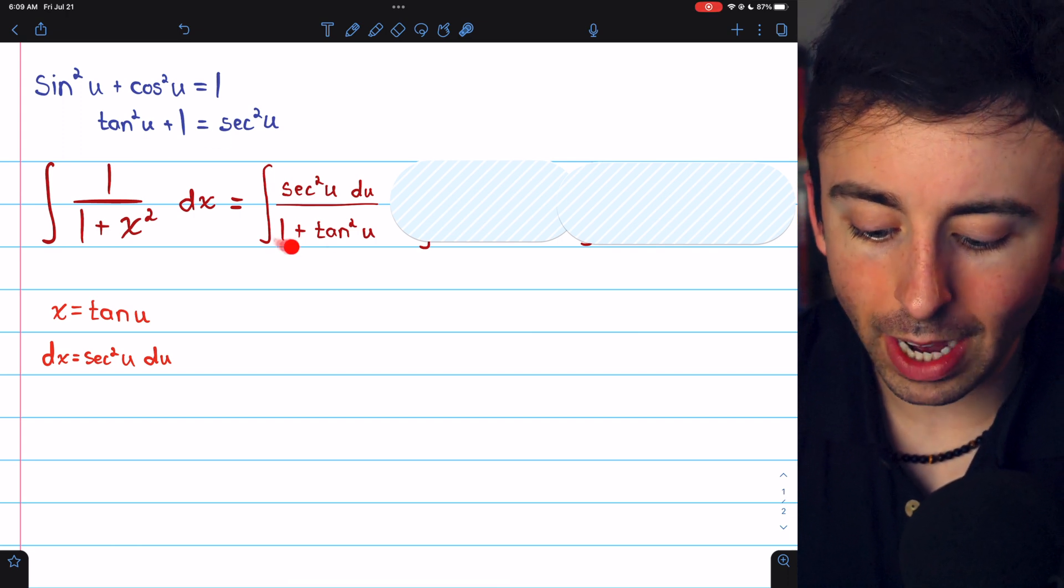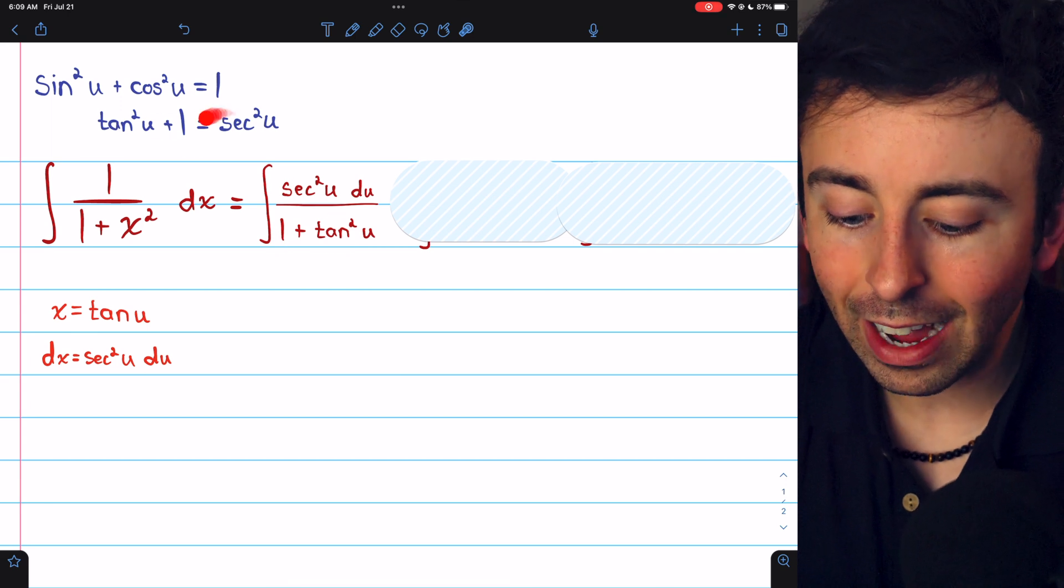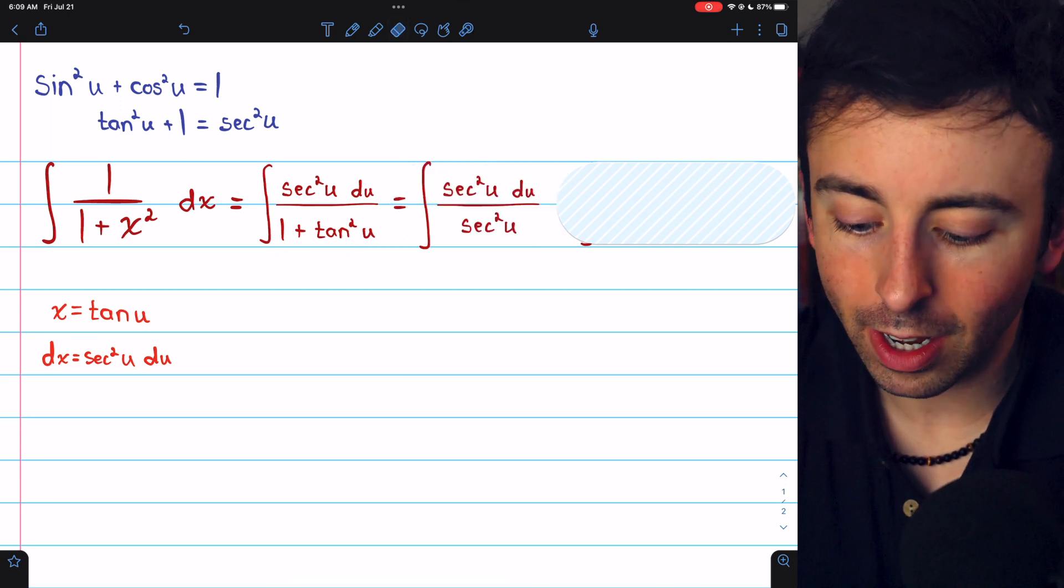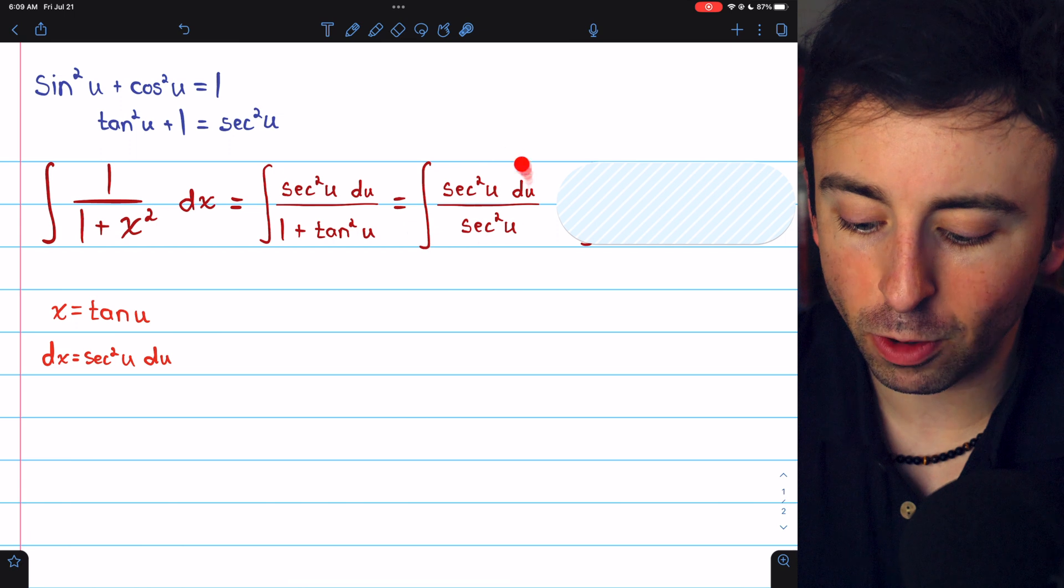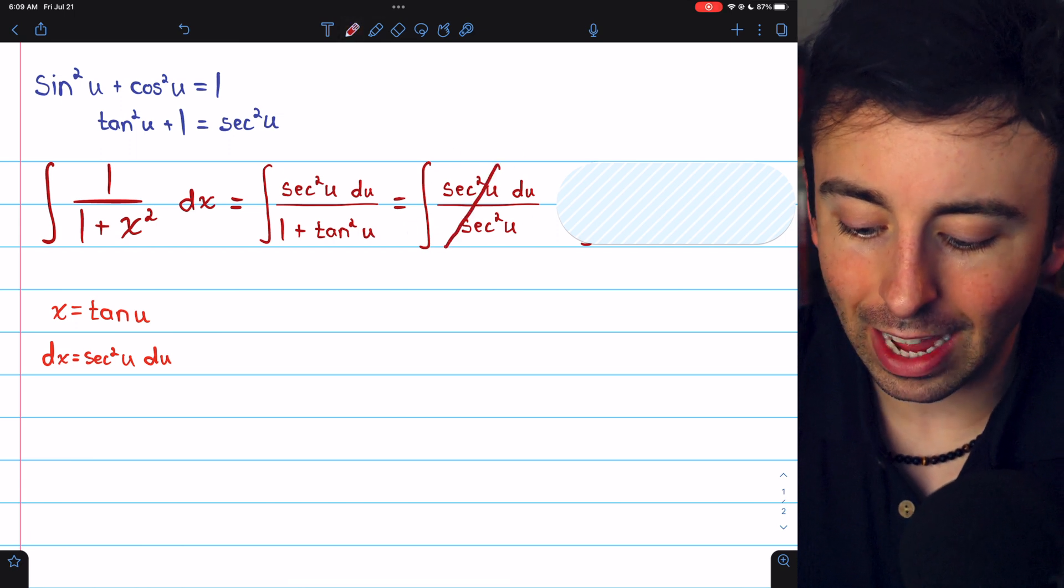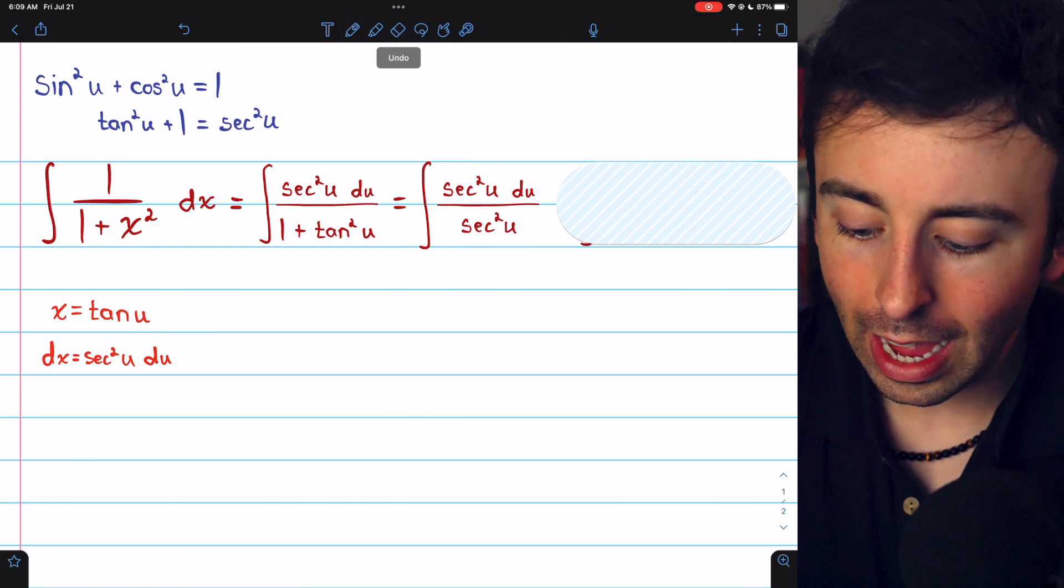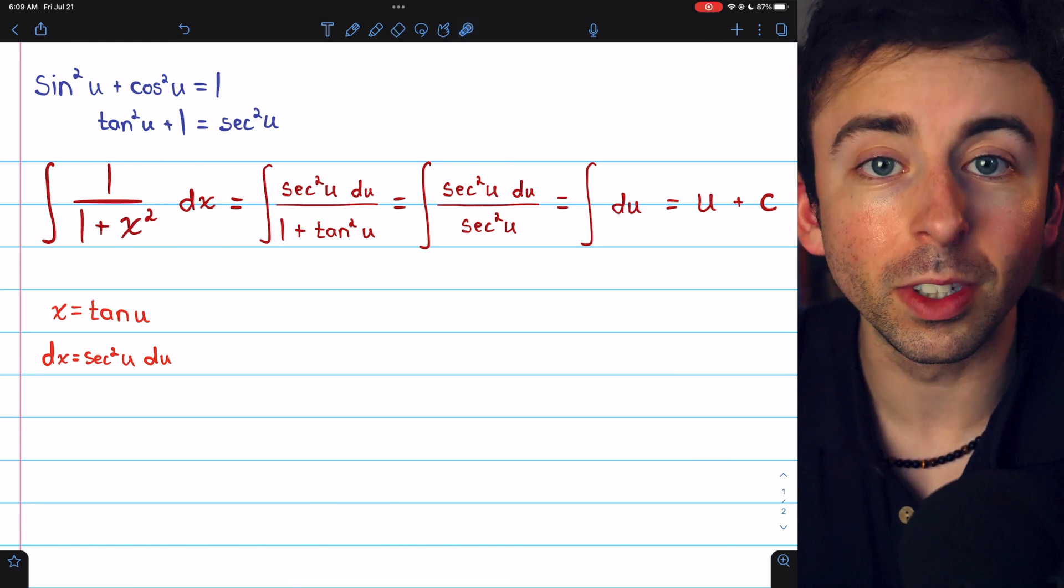So, in this denominator, 1 plus tangent squared, that's actually secant squared. Thus, we can rewrite the integral like this. The secant squareds cancel out, and what remains is the integral of du.